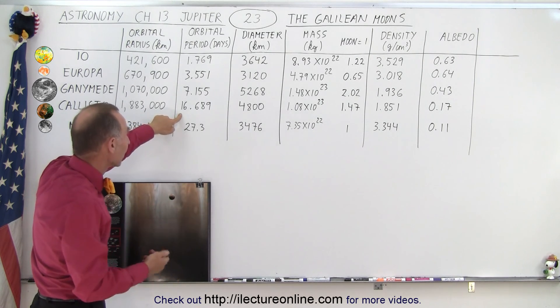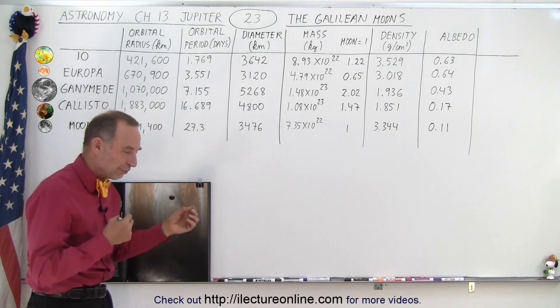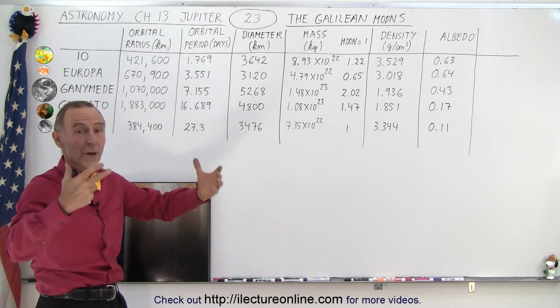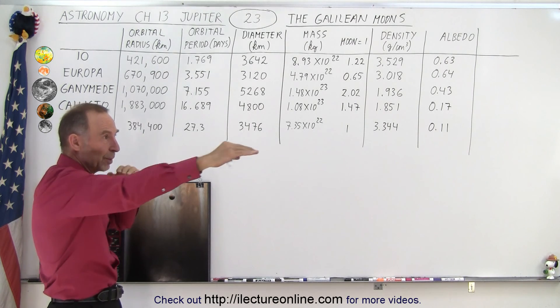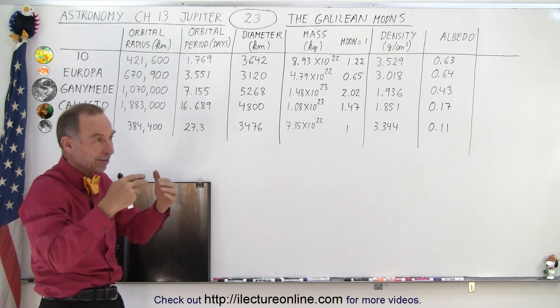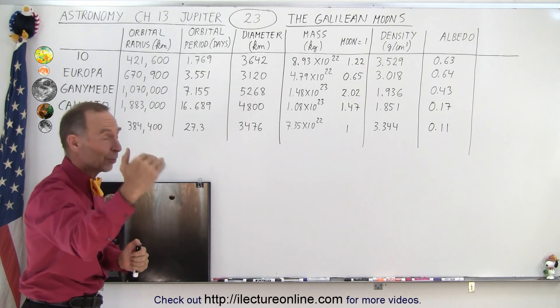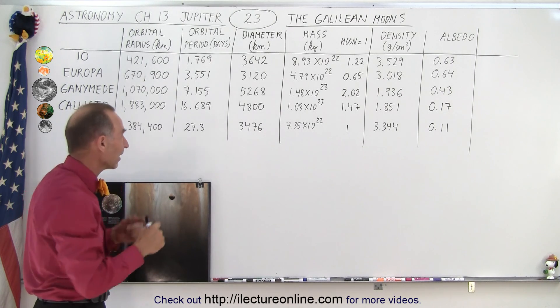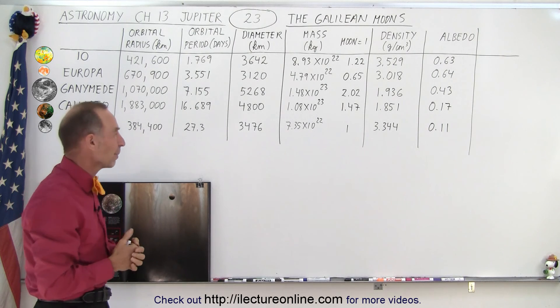Because of those variations in speed, as you observe the planet Jupiter with a small telescope and you see the four moons, sometimes one of the moons will be behind Jupiter and you only see three dots. Sometimes you'll see three dots on one side and one dot on the other side, or you'll see all four moons on one side and none on the other side. It's kind of interesting to keep track of that because of the variation in the speed of the moons.